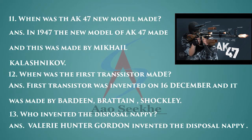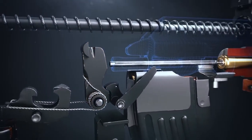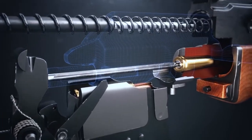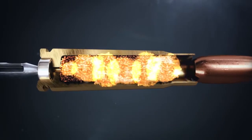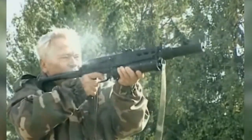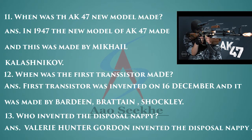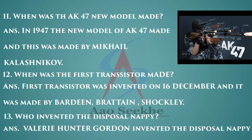Eleventh: when was the new model of the AK-47 made? In 1947, the new model of the AK-47 was made, and it was made by Mikhail Kalashnikov. Twelfth: when was the first transistor made? The first transistor was invented on 16th December.